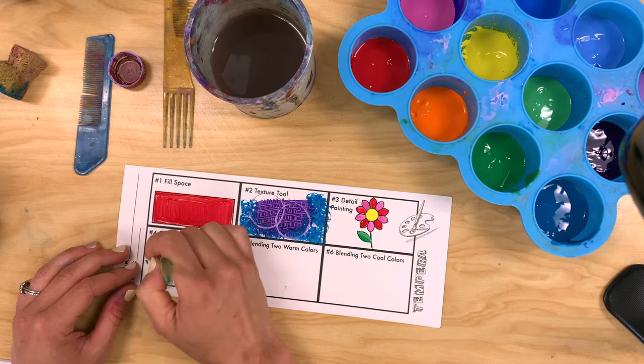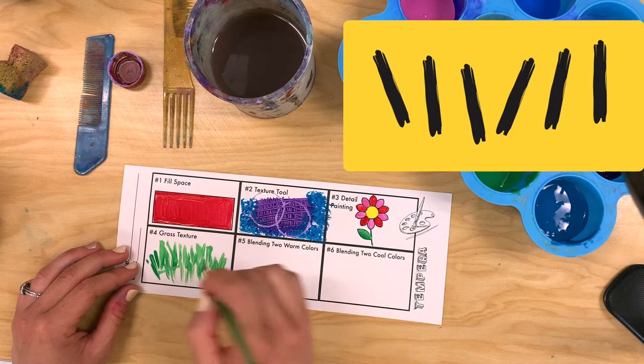Technique number four is creating a grass texture. For this we're going to use a combination of small dashes to create that look or that texture, that feeling of grass.